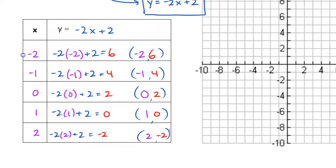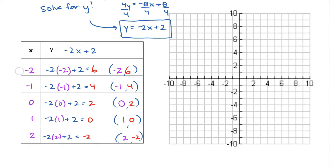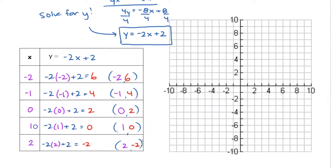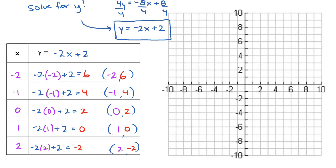All right, now that we have all of our points, we are ready to go ahead and plot those points so that we can graph our linear equation. So let's start with our first ordered pair, negative 2, 6. That means if I start at the origin, I want to go left 2 and up 6. Next point is negative 1, 4. We're going to go left 1 and up 4. So we've got that second point done.